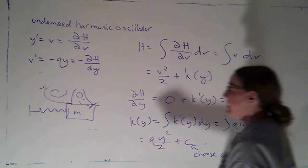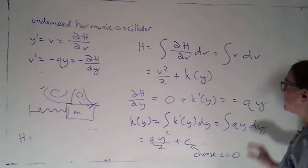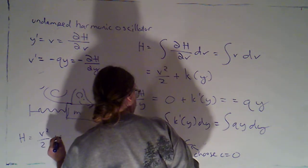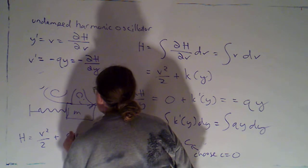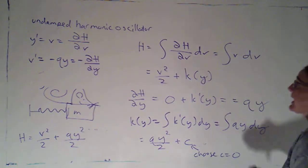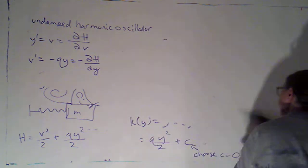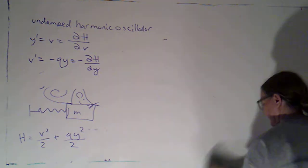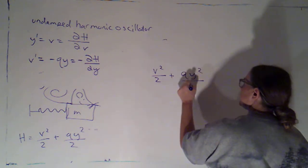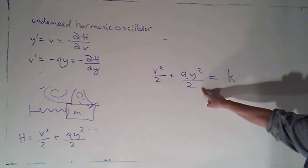So, now I can put the pieces together, and I'm going to get that h is equal to v squared over 2 plus qy squared over 2. So, that's my Hamiltonian function. My level curves for that, v squared over 2 plus qy squared over 2 equals some constant. Those are ellipses.